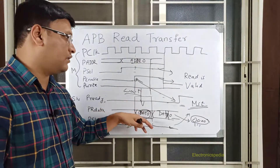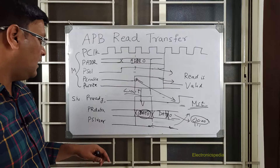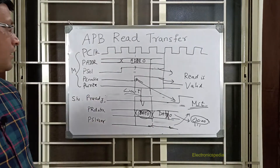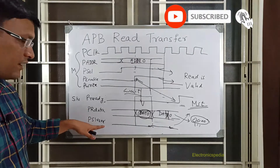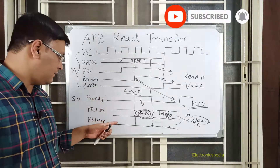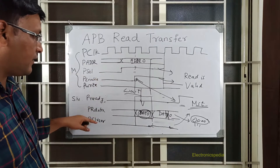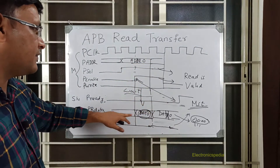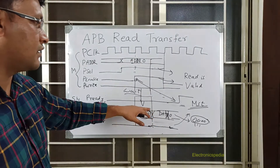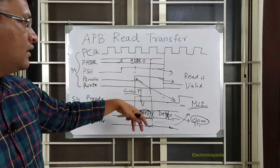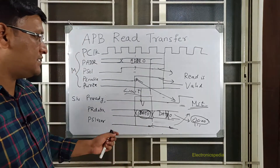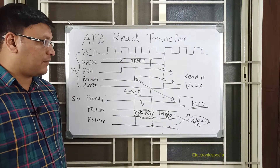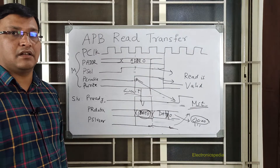I hope this information is clear. One more thing - this slave error is also applicable for the write transfer as well. The master should look for the slave error signal when all of PSEL, PENABLE, and PREADY are asserted. If PSLVERR is asserted then the data can contain a garbage value, and the master needs to drop that particular data. So this is about the basic APB read transfer. I'll come up with more such videos - please do subscribe to my channel if you haven't. Thank you.